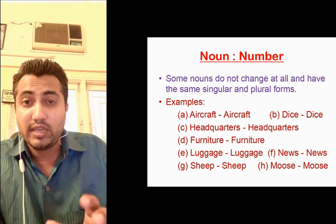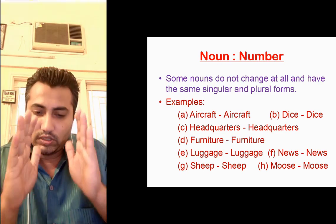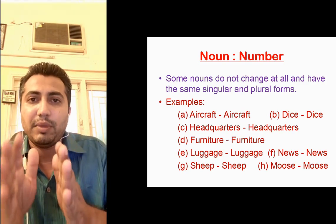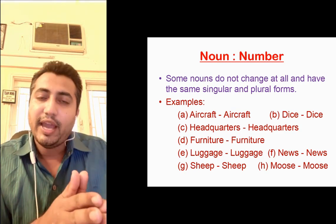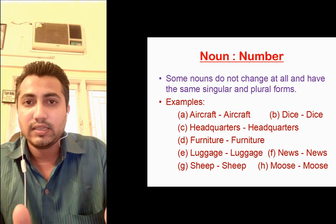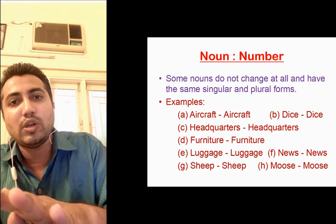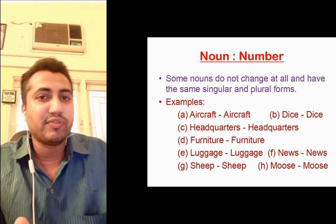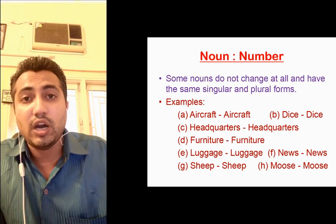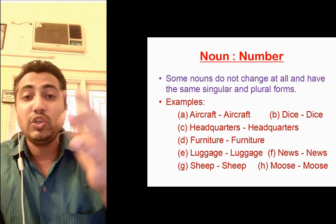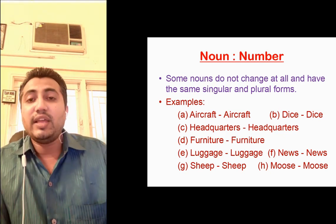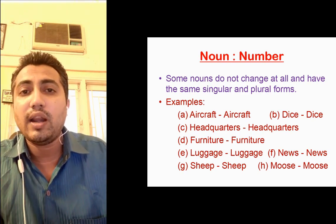The next rule says there are some nouns which remain the same in both singular and plural form. For example: aircraft remains aircraft, dice remains dice, headquarters remains headquarters, furniture remains furniture, luggage remains luggage, news remains news, sheep remains sheep, moose remains moose. You can see that the noun in singular and plural are the same.